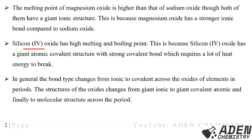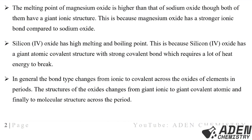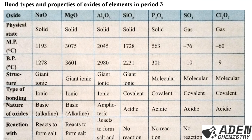Silicon dioxide has high melting and boiling points because it has a giant atomic or giant covalent structure with strong covalent bonds, which require a lot of heat energy to break. In conclusion, the bond type changes from ionic to covalent across the oxides of elements in Period 3, and the structure of the oxides changes from giant ionic to giant covalent and finally to molecular structure across the period.